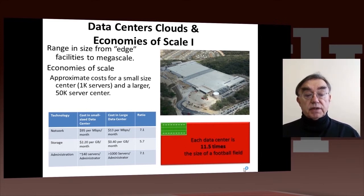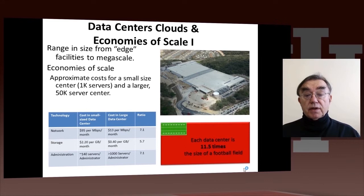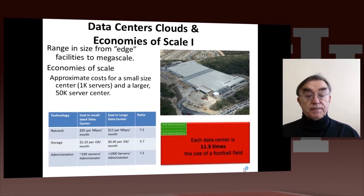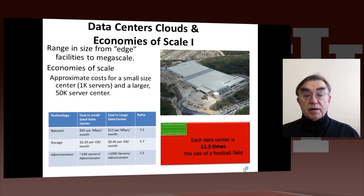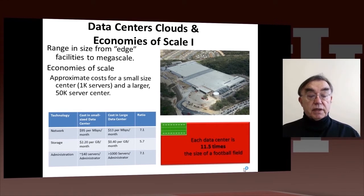That location has economy of scale — you can save on the number of people required to manage the system. If you have a million computers in one place, it probably does not need ten times as many people to run it as 100,000. You can also carefully place these clouds in locations where the cost of energy is low and perhaps environmentally friendly. The bottom right of this slide points out that cloud centers are some ten times or more bigger than a football field, and the bottom-left table shows how the cost of a large data center compares to a small one — a factor of five to seven.